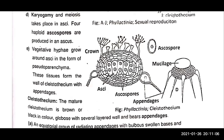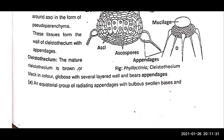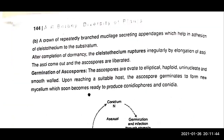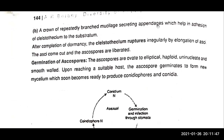The cleistothecium is round. The asci produce 1, 2, 3, 4, 5 asci in the form of spores inside. The mature cleistothecium is brown to black in color, with several-layered walls and pear-shaped appendages. An equatorial group of radiating appendages with bulbous swollen bases and a crown of bitterly branched appendages help attach the cleistothecium to the substratum.